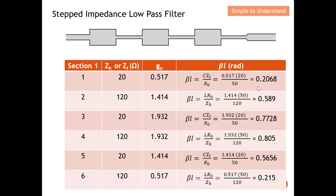These values are all in radians and will be converted to degrees later. By continuing through all six g-terms using the appropriate capacitor or inductor formula for each section, you can populate a full table of electrical lengths. Simply punch the calculator for each section and you should arrive at all the required values.